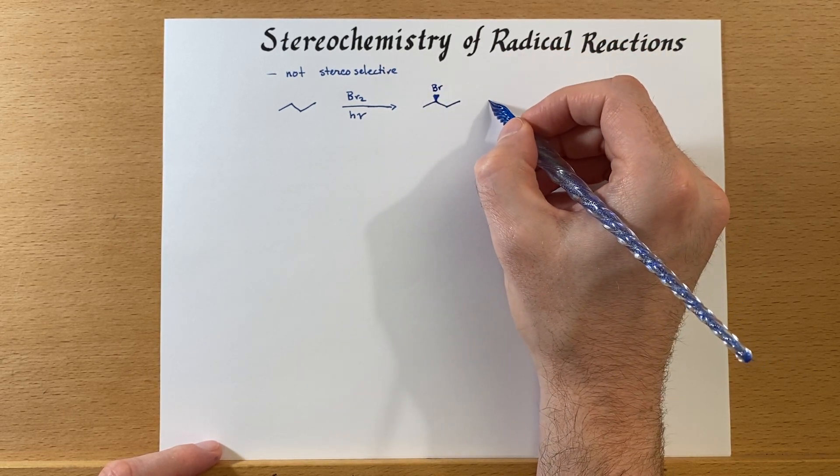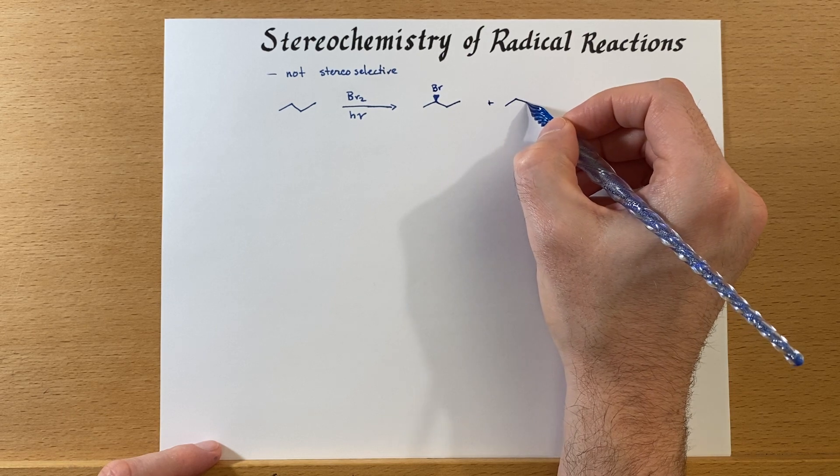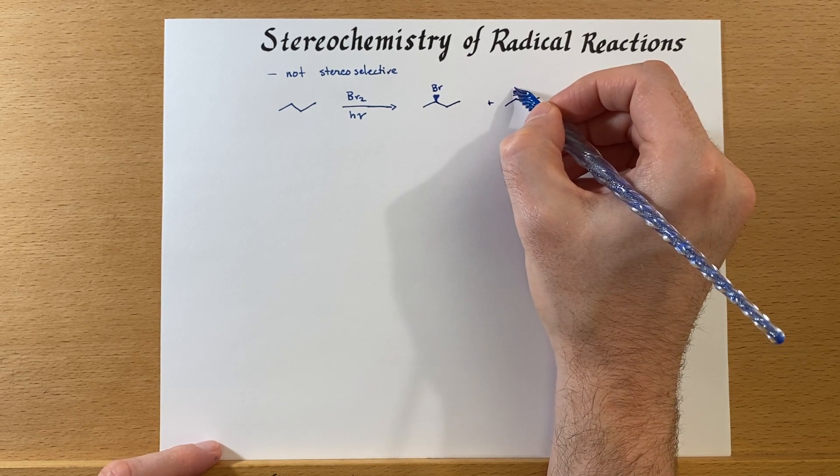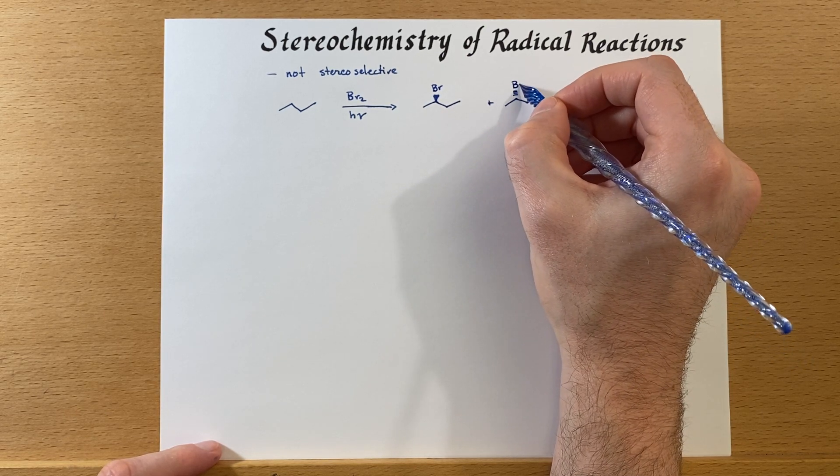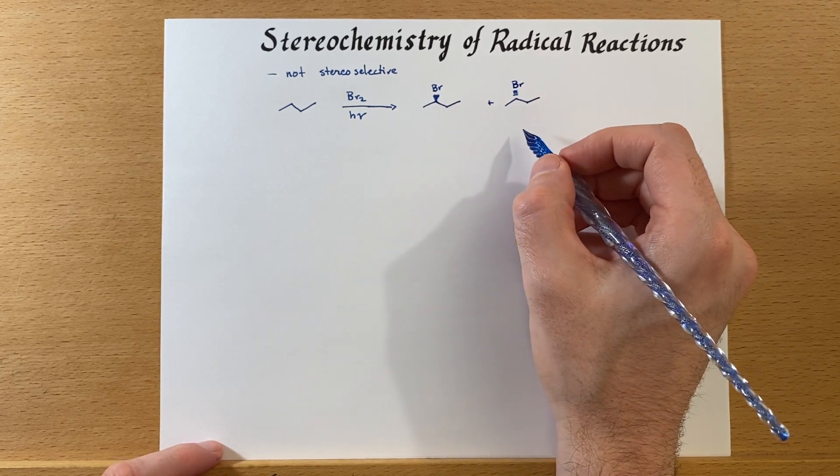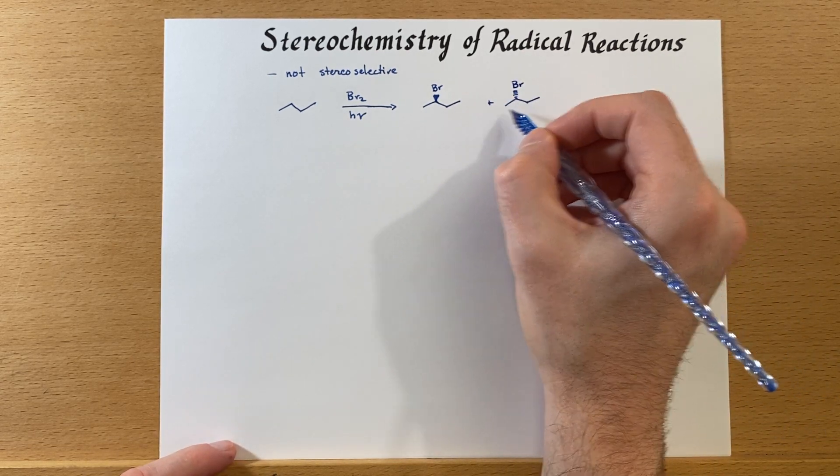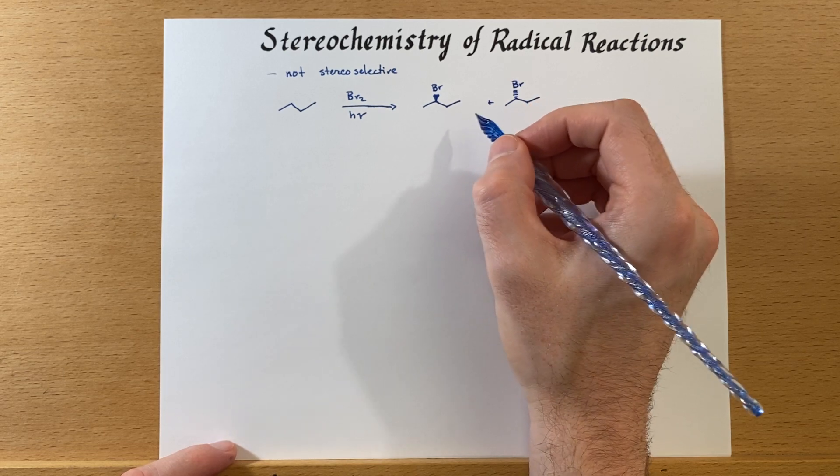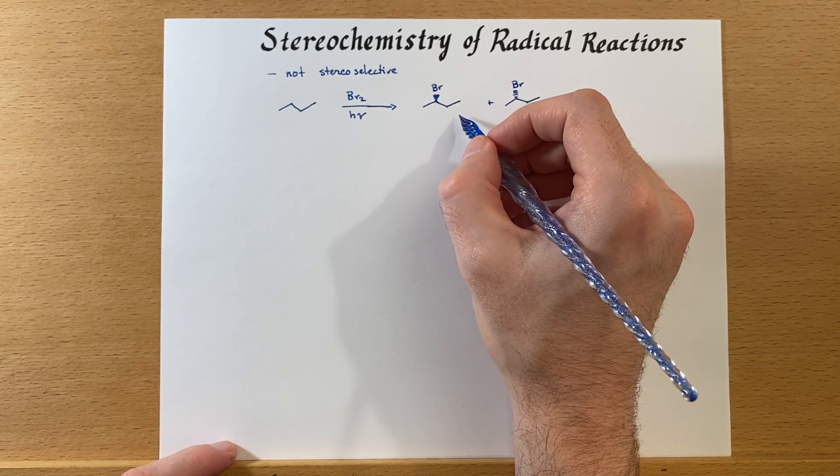Whichever one of these is R and the other one would be S, and I really didn't bother to figure out which one is which before hitting the record button. Suffice it to say though, you will get a racemic mixture. There is no selectivity here.